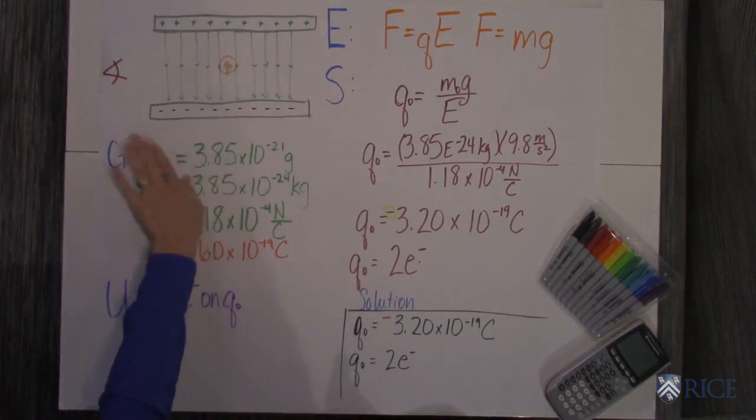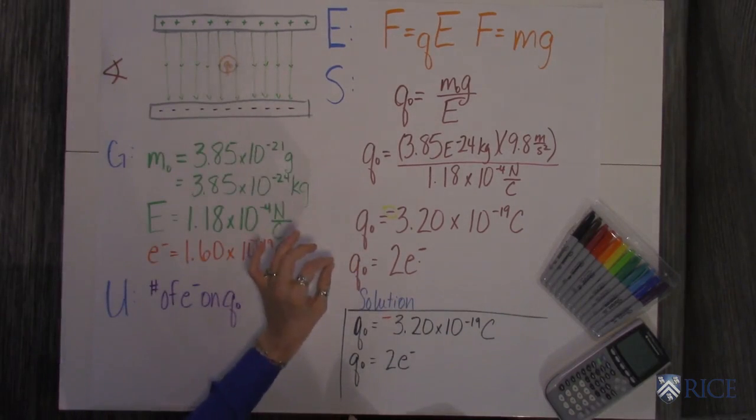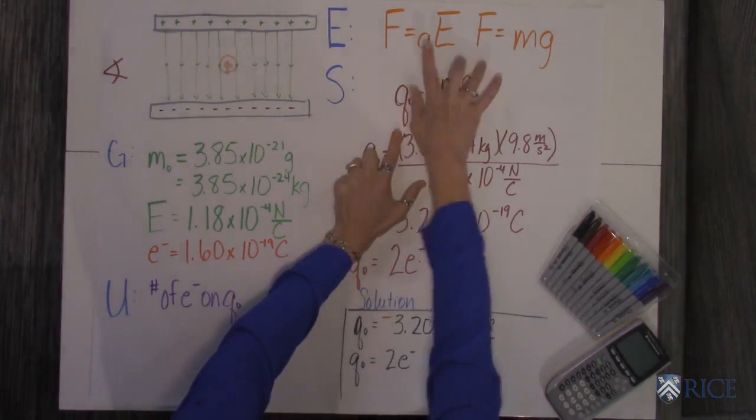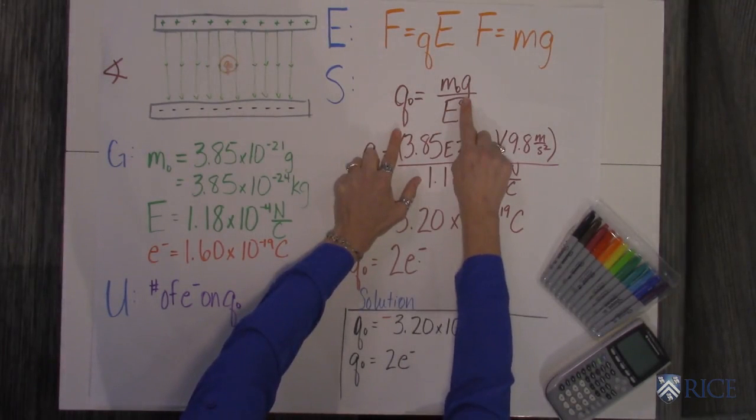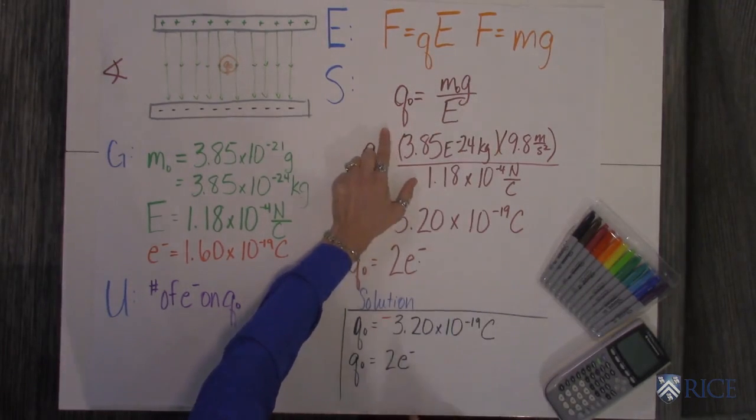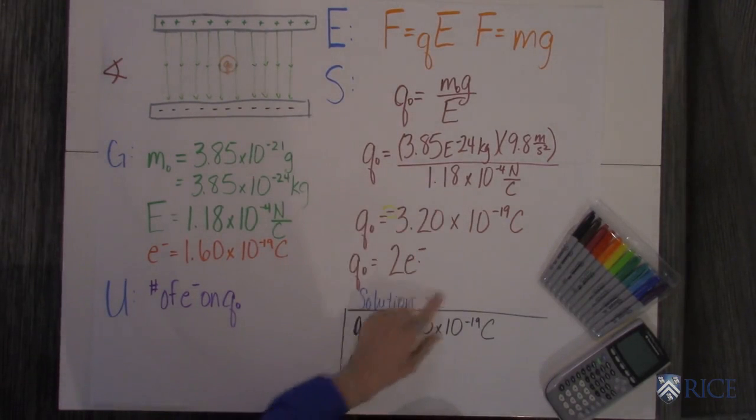That's what that negative sign is. And you know the magnitude of the charge has to be, when you set these two things equal to each other and solve for Q, mg divided by the electric field. When you put those numbers in,